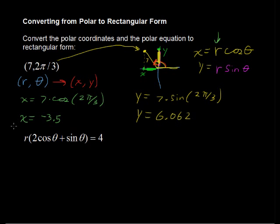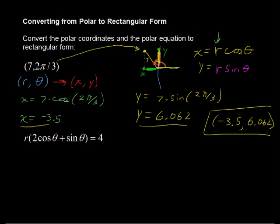So the ordered pair then is this x, y pair, and that is (-3.5, 6.062). We've done the work of converting that point in polar coordinates into the rectangular form, the rectangular coordinates.